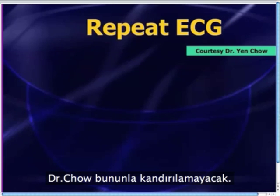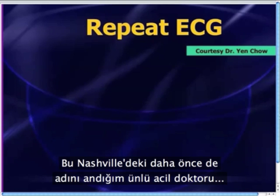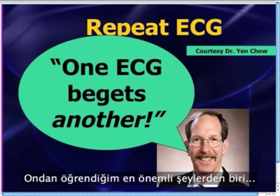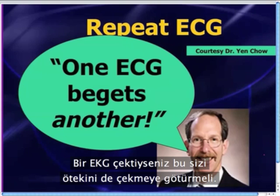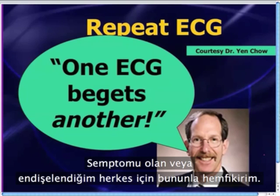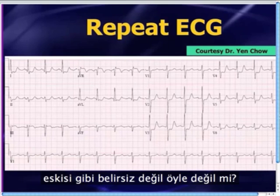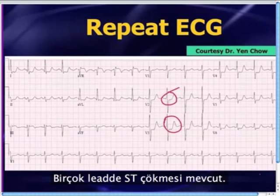Dr. Chow was not going to be fooled by this. He decided to go ahead and get a repeat EKG — largely because of teaching by a very famous emergency physician in Nashville, Dr. Corey Slovis, the chairman of the emergency department at Vanderbilt. One of the most important things I've learned from him is his concept that one EKG begets another. When in doubt — in fact, not even when in doubt — when you get one EKG, it should lead you to get another one. Dr. Chow got a repeat 12-lead EKG, and now those changes are not subtle anymore. Even your computer is going to pick this up. There's big-time ST depression in a handful of leads.